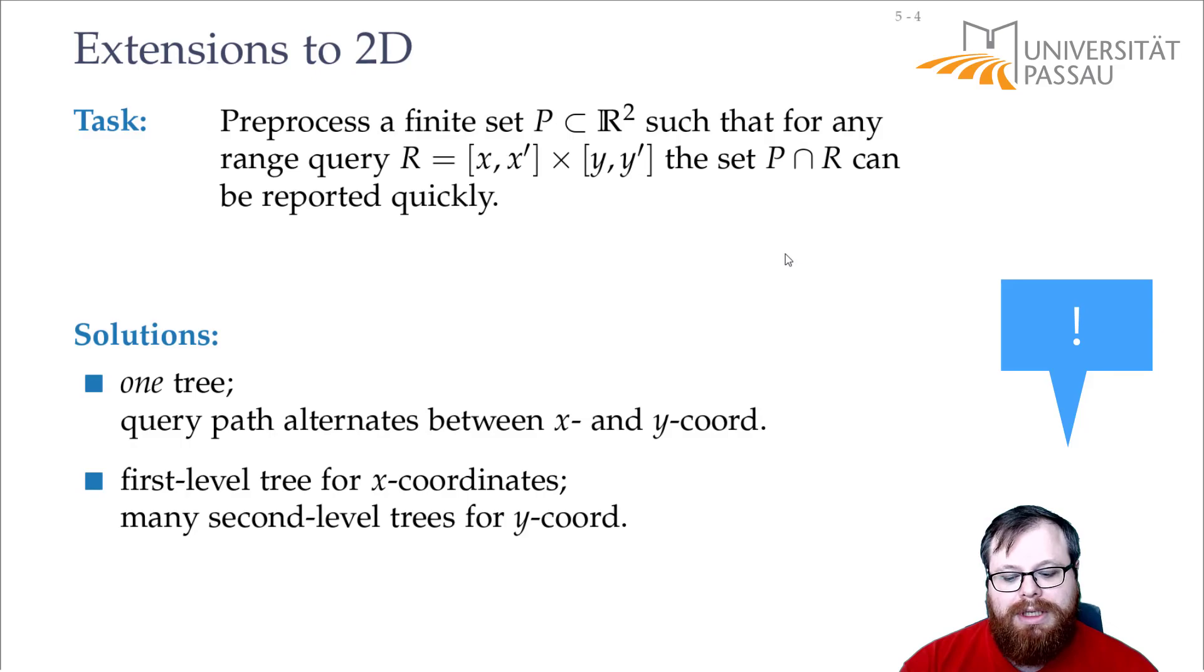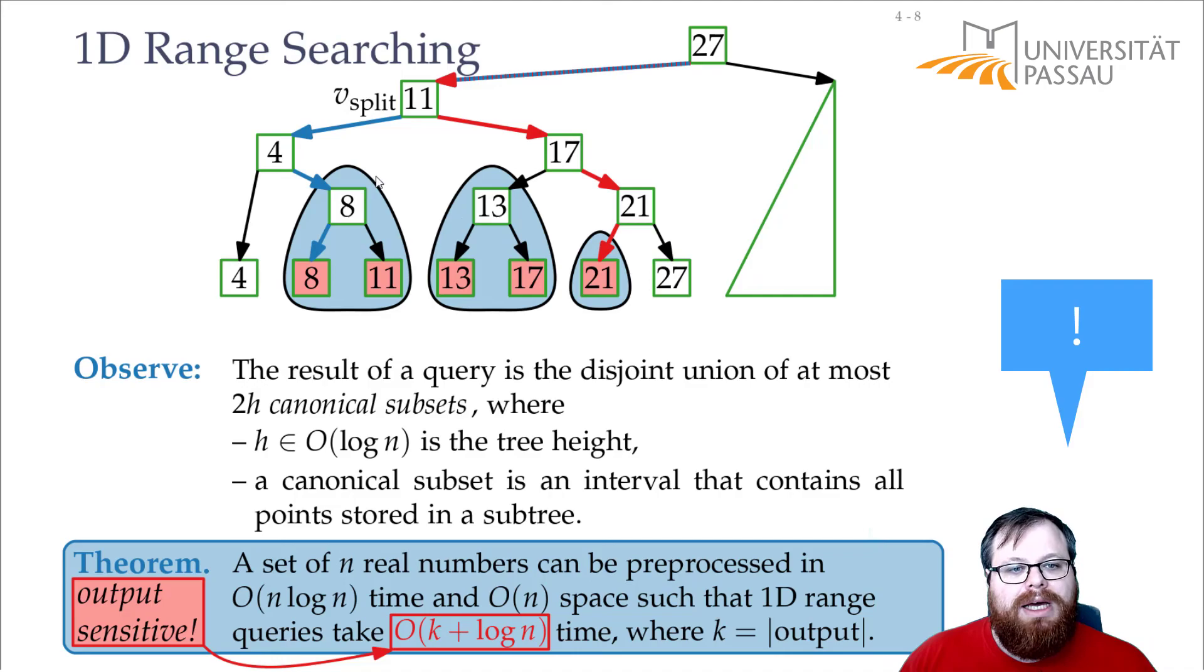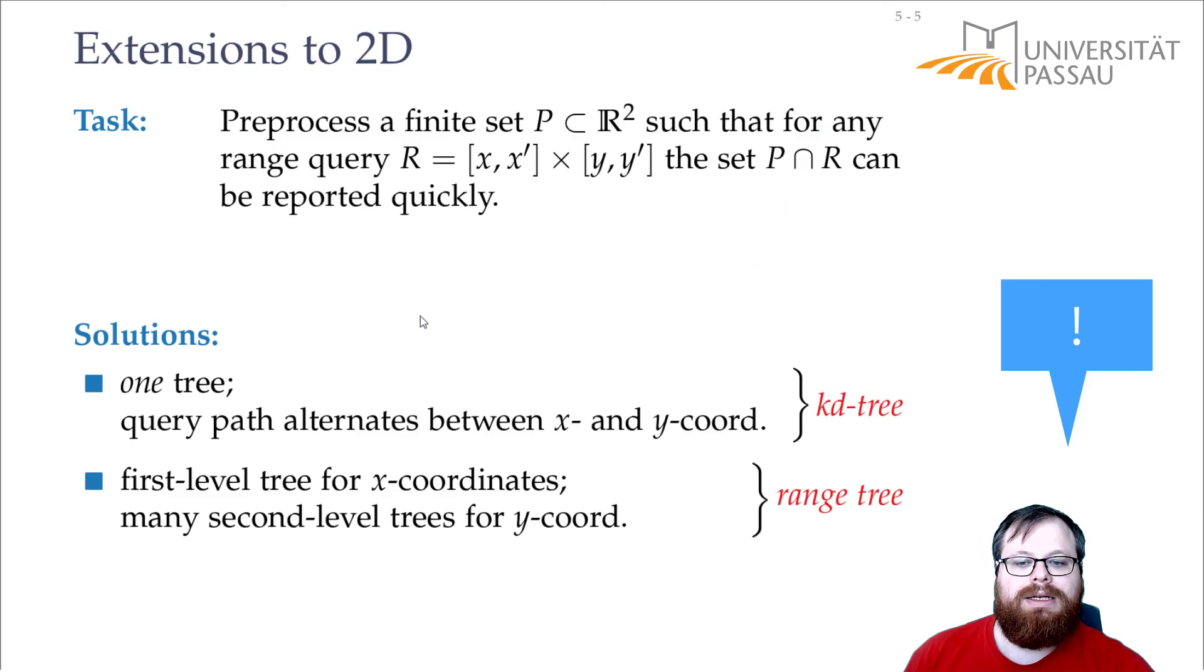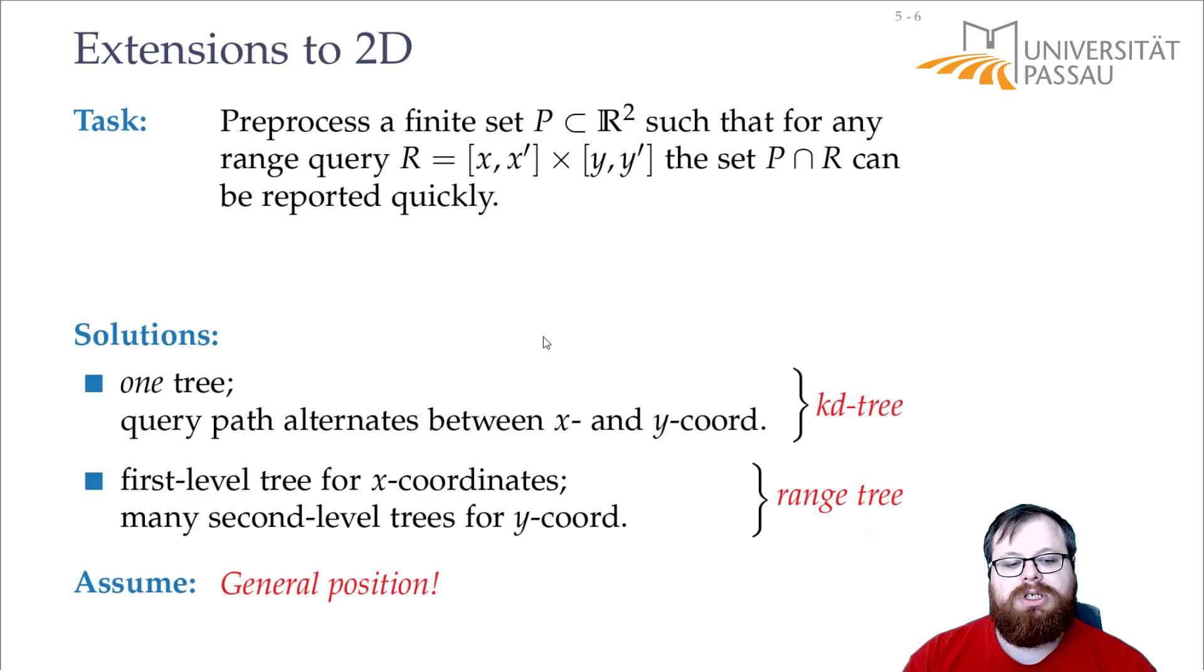And the second one is, we have two trees. So basically, we have one tree, like here, where we have all the x coordinates. But then, instead of reporting these canonical subsets, all these canonical subsets give us a second tree that contains the elements, but ordered by y coordinate. And then we search for the y coordinates in there. And this is the KD tree, and this is called the range tree. And those we want to look at in the next few slides.